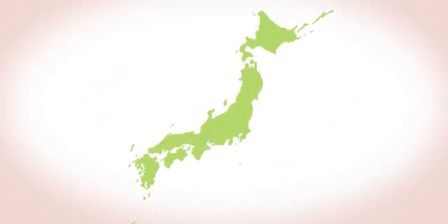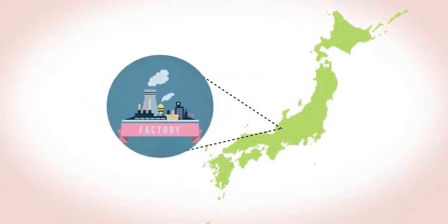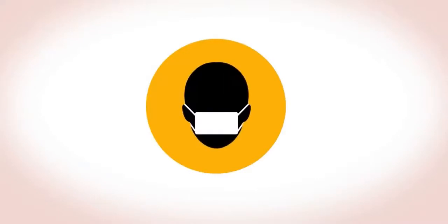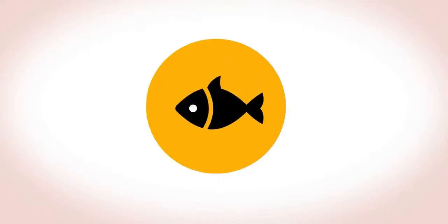In Minamata, Japan, a polluting mercury fungicide factory was closed in 1968, yet people there have continued to be affected by mercury poisoning, the so-called Minamata disease ever since, because the fish caught locally in the bay still have traces of mercury in them.